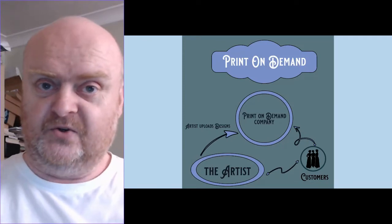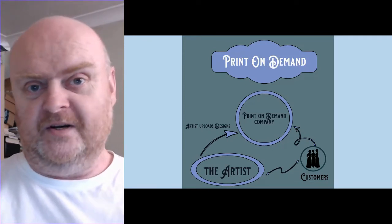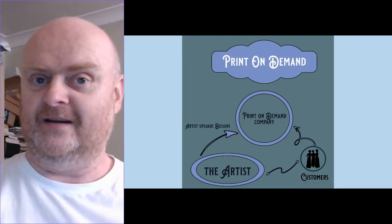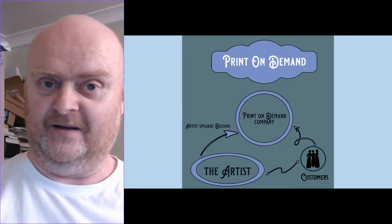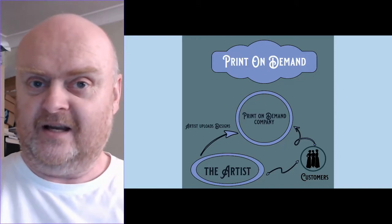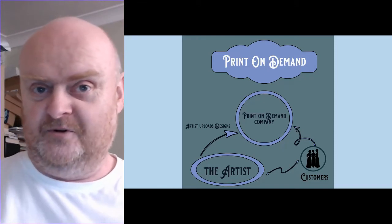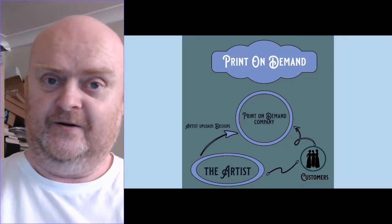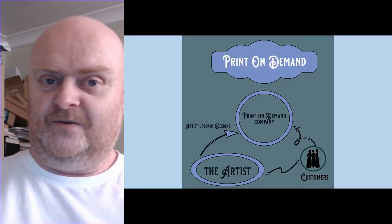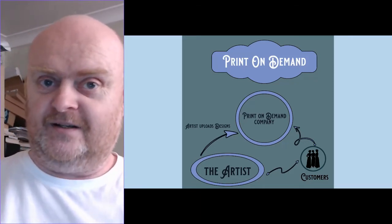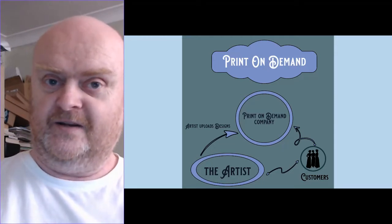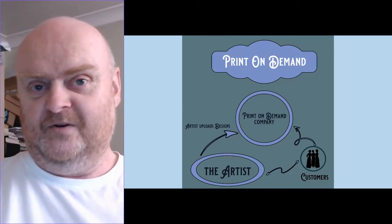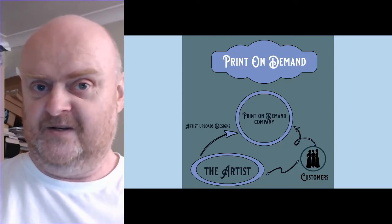You can see on the screen that there are three different groups or entities interacting in print on demand: the print on demand company, the customers or potential customers, and the artist or designer. The way those three groups interact gives rise to different business models — basically two main ones you can choose from.